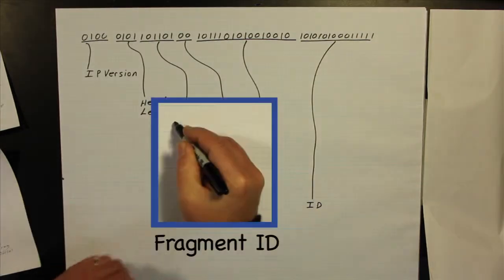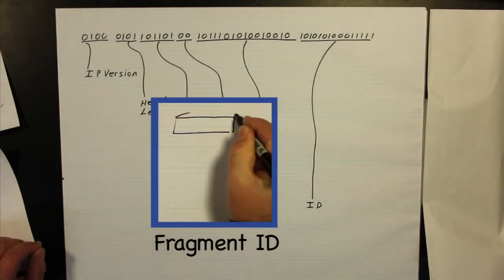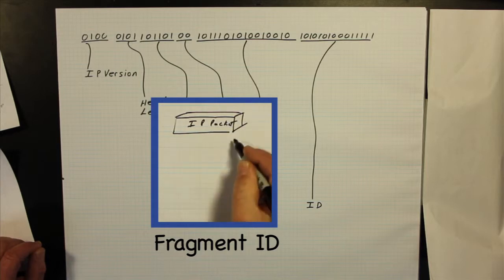The next 16 bits are used to identify the parts, or fragments, of an IP packet that has been broken up in order to pass through a particular network.